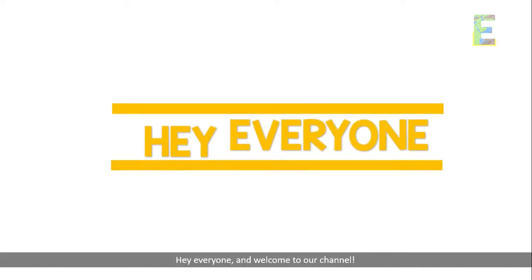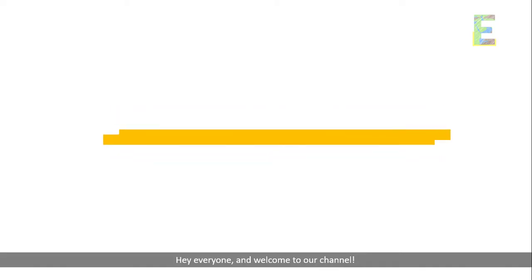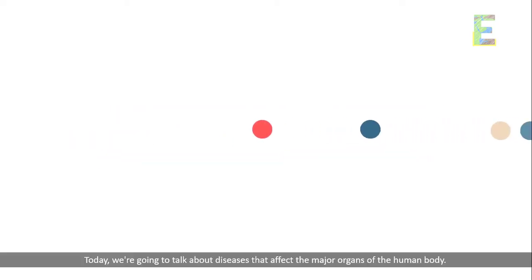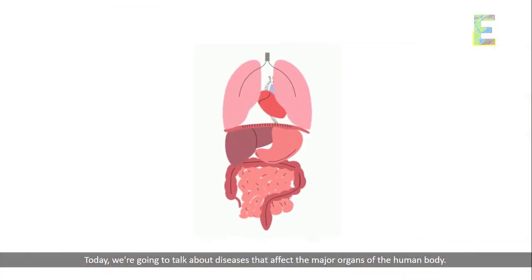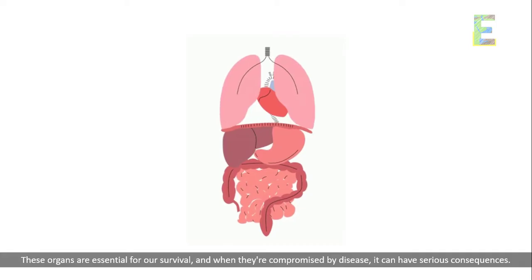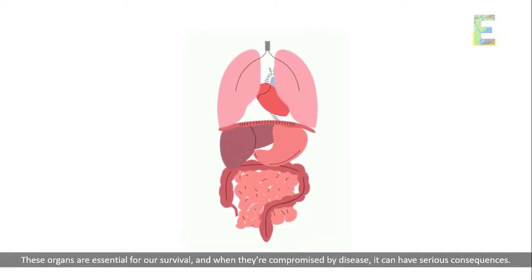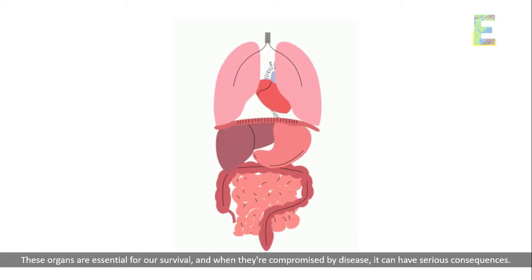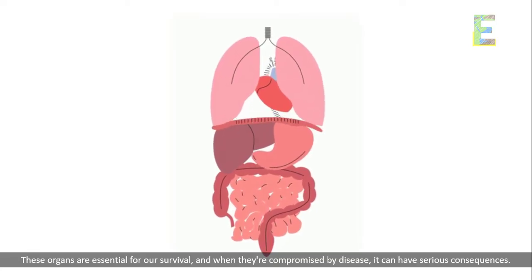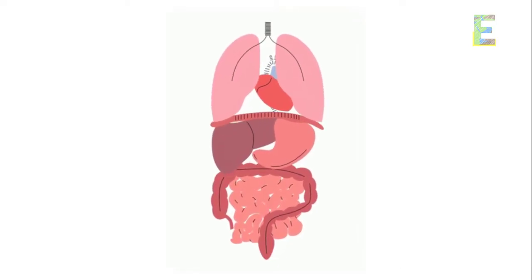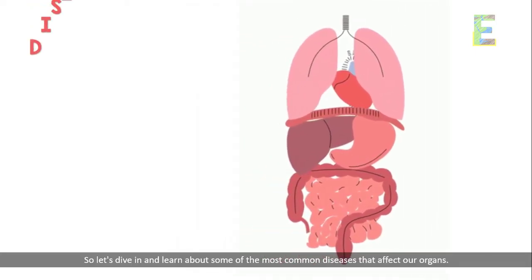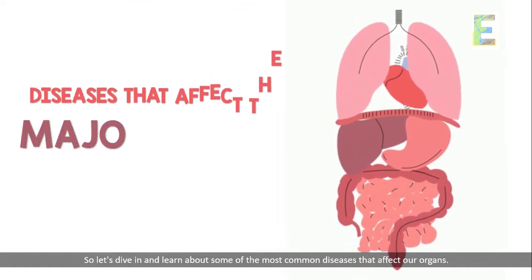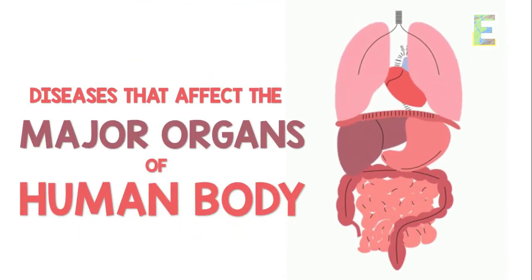Hey everyone, and welcome to our channel. Today we're going to talk about diseases that affect the major organs of the human body. These organs are essential for our survival, and when they're compromised by disease it can have serious consequences. So let's dive in and learn about some of the most common diseases that affect our organs.